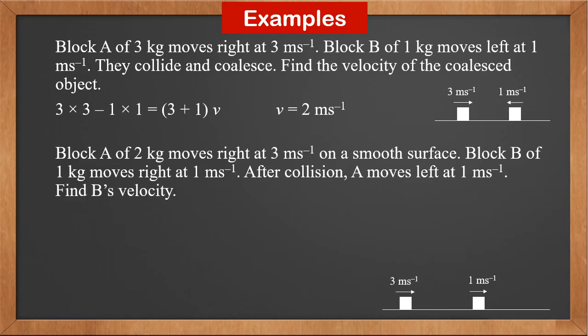Block A of 2 kilograms moves right at 3 meters per second on a smooth surface. Block B of 1 kilogram moves right at 1 meter per second. After the collision, A moves left at 1 meter per second. Find B's velocity. The total momentum before collision is 2 times 3 plus 1 times 1. After collision, the momentum is V minus 2 times 1. These are equal, so V is 9 meters per second.